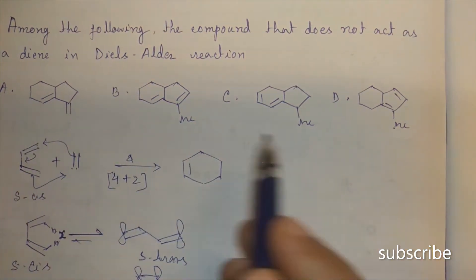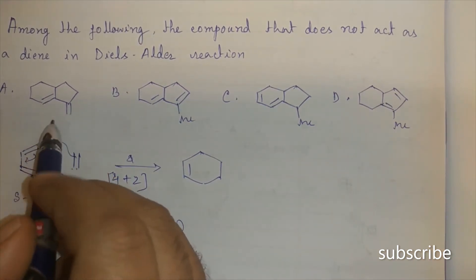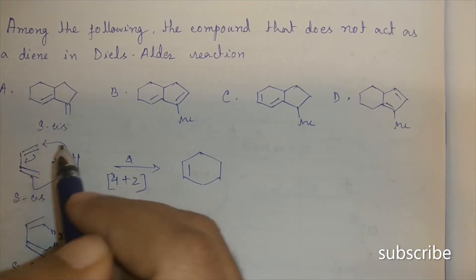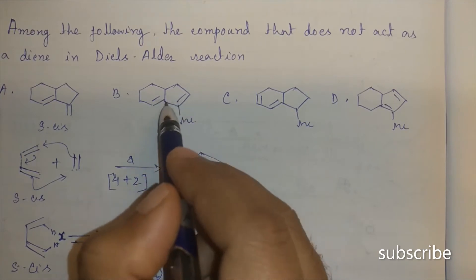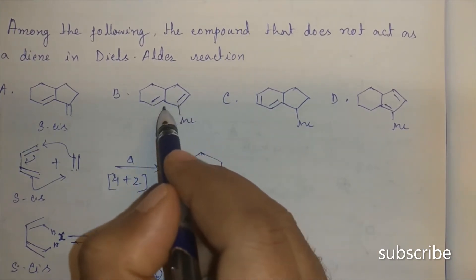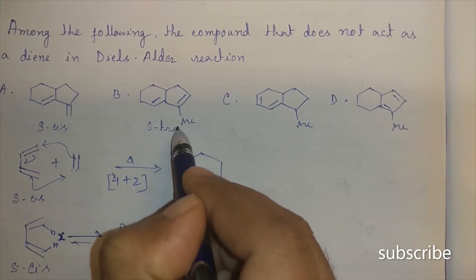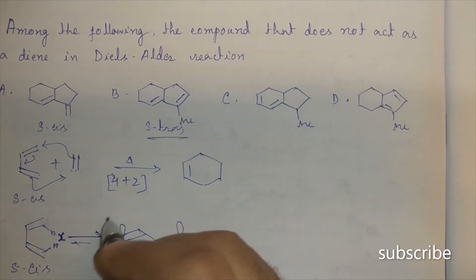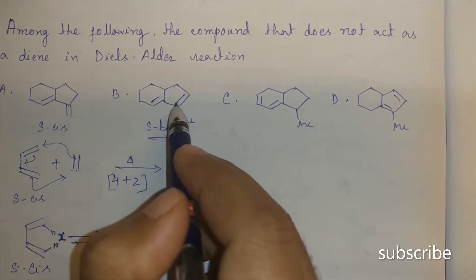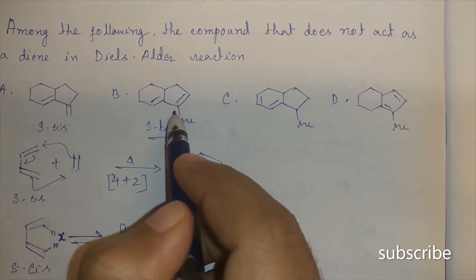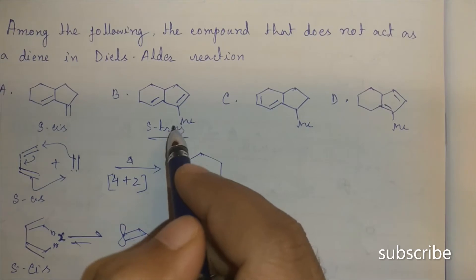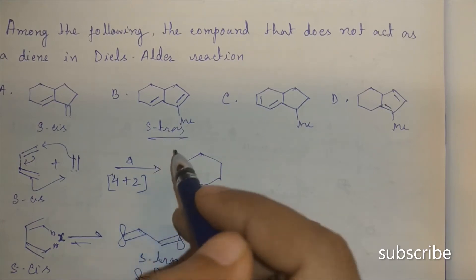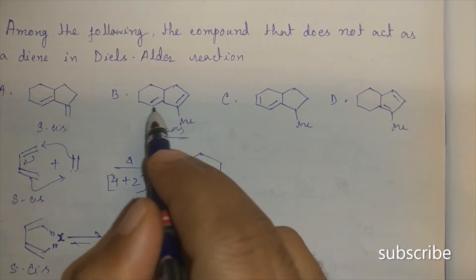Among the four dienes shown, one diene is already in s-cis configuration so it will act as a diene. However, in another diene the double bonds are in s-trans configuration and are incorporated in a ring, so conversion from s-trans to s-cis is not possible because the energy barrier is very high. Therefore, this diene will not participate in the Diels-Alder reaction.